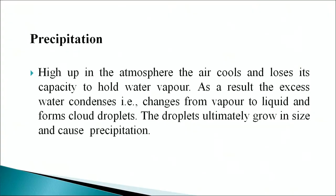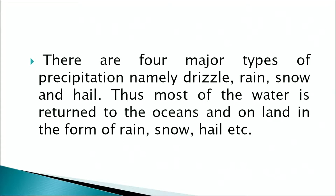The second process is precipitation. High up in the atmosphere, the air cools and loses its capacity to hold water vapor. As a result, the excess water condenses — changing from vapor to liquid — and forms cloud droplets. The droplets ultimately grow in size and cause precipitation. There are four major types of precipitation: drizzle, rain, snow, and hail. Through precipitation, most of the water is returned to the ocean.